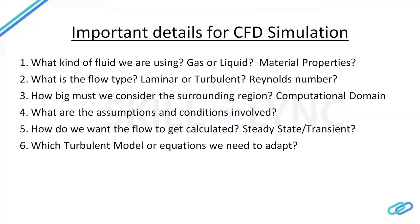After understanding material properties and flow type, we need to determine the domain size. For example, if we consider an aircraft flying in air and create a domain too close to its vicinity, the wall effects — shear effects or friction effects from the domain walls — will affect the aircraft's CL and CD values. So we must define a domain large enough that the walls do not interact with the flow near the body.